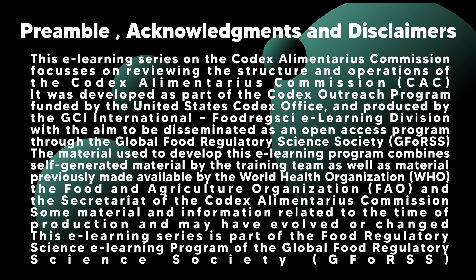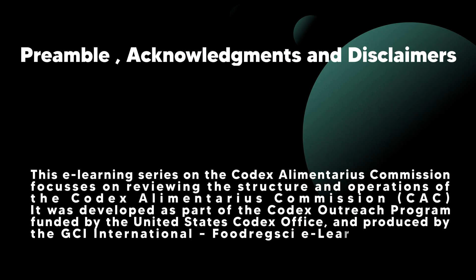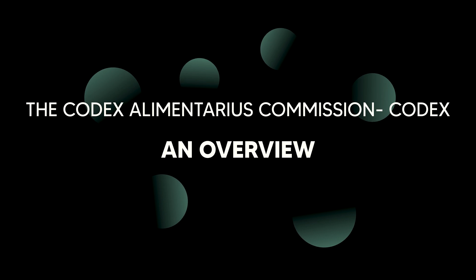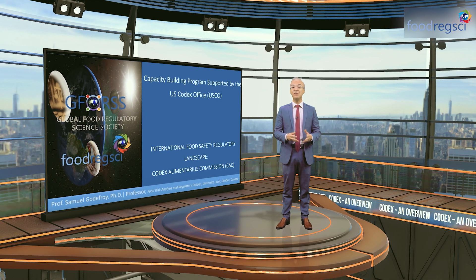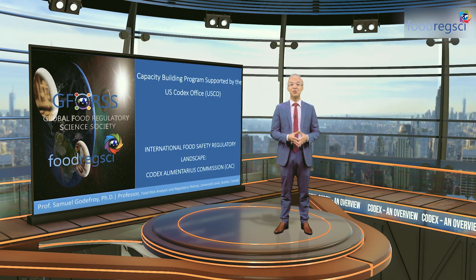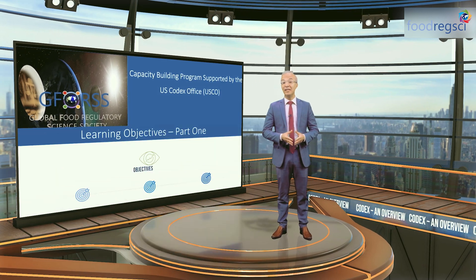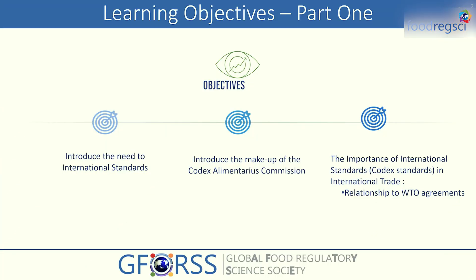Thank you for joining us. The first part of this capacity building program is related to the international food regulatory landscape and the positioning of Codex, or the Codex Alimentarius Commission, in it. We will examine the need for international standards, introduce a brief description of the structure and composition of Codex, then review the importance of Codex standards and the relationship between these international standards and international agreements of the World Trade Organization, the WTO.